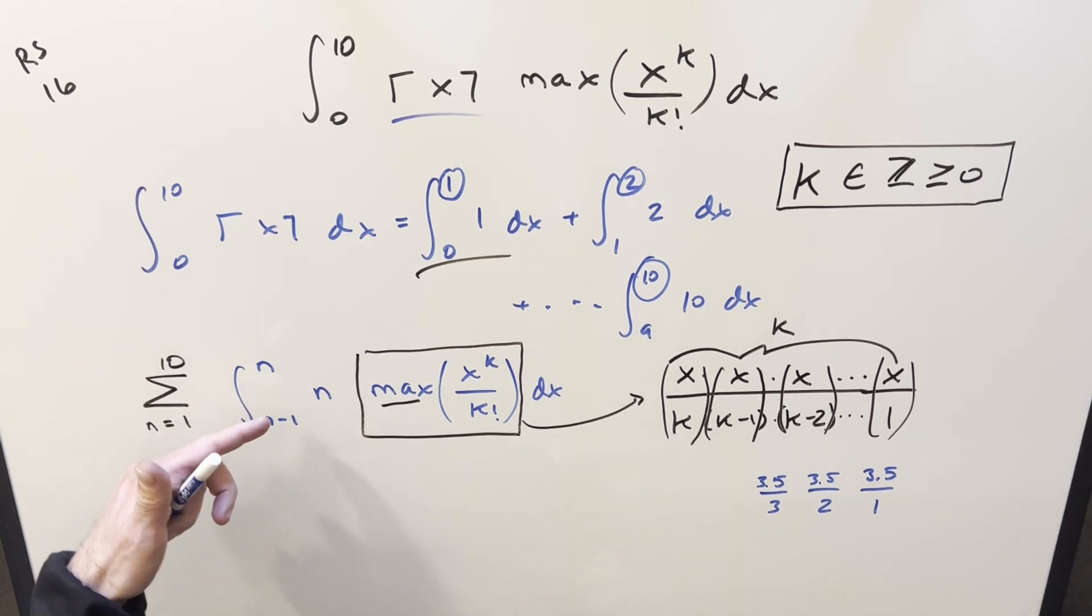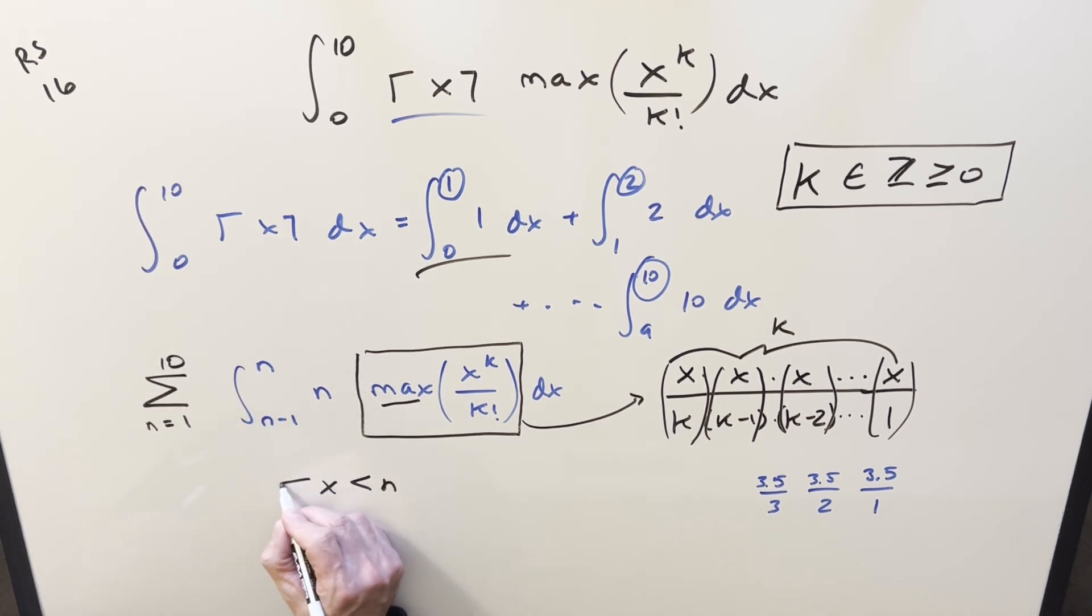But now what I want to do is just generalize it for what we have here, because we don't know a specific value. But what we do know is for each of these, the x value is going to be less than n, and it's going to be greater than n minus 1. And now this last number that we chose right here, this is actually our k value that we want. In this case, it's going to be 3. So what we found here is we need k to be an integer, but we need k to be less than x. So we want k to be less than x.